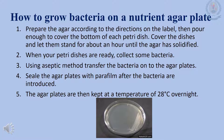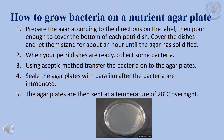Now let's learn about how to grow bacteria on a nutrient agar plate. There are a few steps in growing bacteria. First, prepare the agar according to the directions on the label, then pour enough to cover the bottom of each petri dish. Cover the dishes and let them stand for about an hour until the agar has solidified.